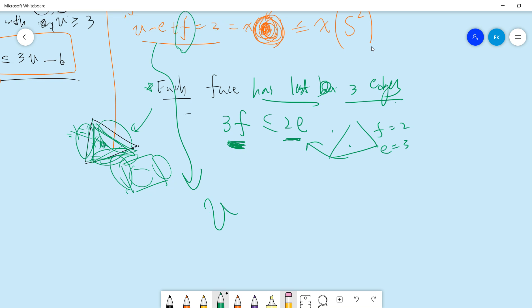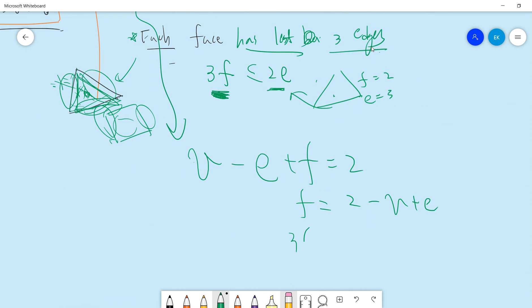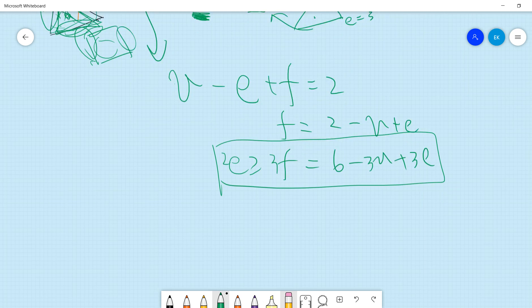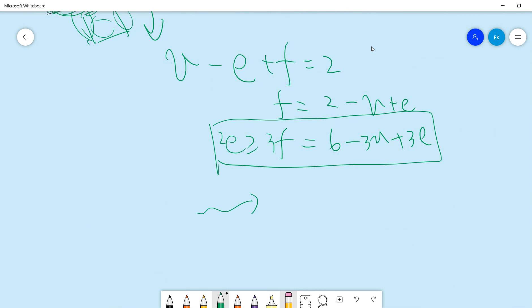Okay, so this tells you that V minus E plus F is two, right, so F is two minus V plus E, and this three F is just six minus three V plus three E, should be less than two E.